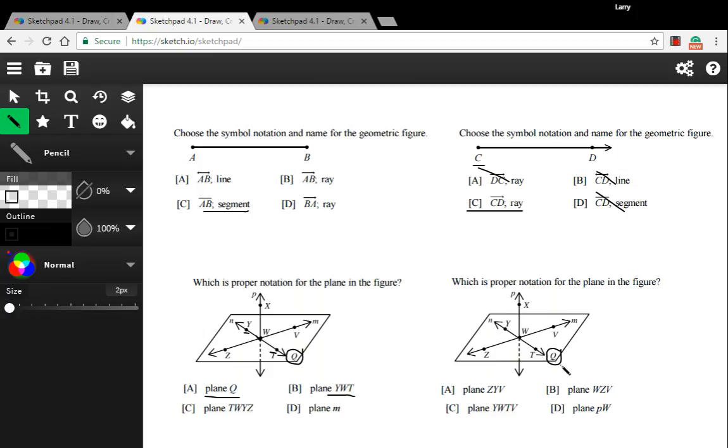Let's look at this next one. We don't have plane Q. I don't know what they're thinking with plane PW. That's just not how we name planes at all. And this one is four letters. We don't use four letters, we use three. So it's between ZYV and WZV. And here's W, here's Z, here's V. Those are all three on the same line. But Z, Y, and V are not all on the same line. So this is a legal name for that plane. All right, a couple more.